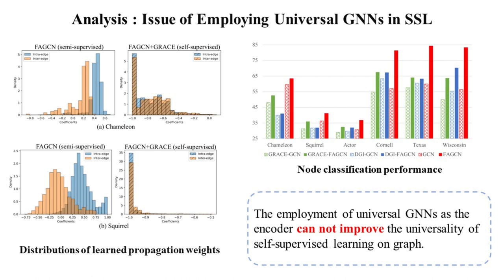Unfortunately, graph universal self-supervised learning remains unresolved. Most existing SSL methods on graphs, which often employ two-layer GCN as the encoder and train the mapping functions, can alter the low-passing filtering characteristic of GCN.